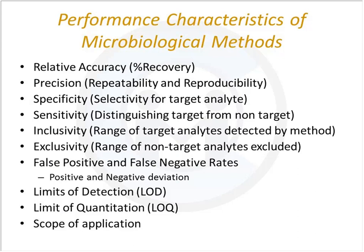Precision is expressed in terms of repeatability and reproducibility, and this applies specifically to quantitative methods when you're actually counting something. Specificity is the selectivity of the method for the target analyte. Sensitivity is the ability of the method to distinguish the target analyte from non-targets. In microbiology, it's very important to look at inclusivity — that is, the range of target analytes detected by the method. For example, there are 2,500 different Salmonella serotypes.